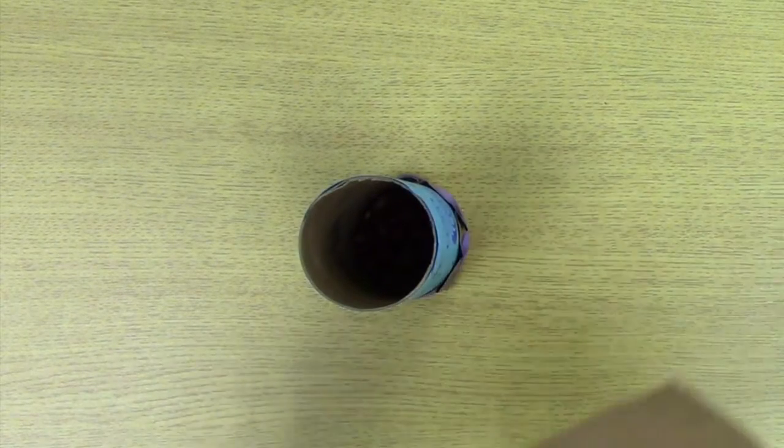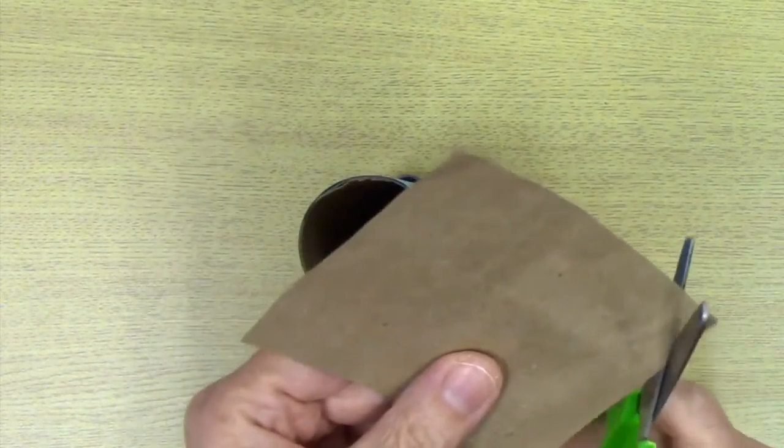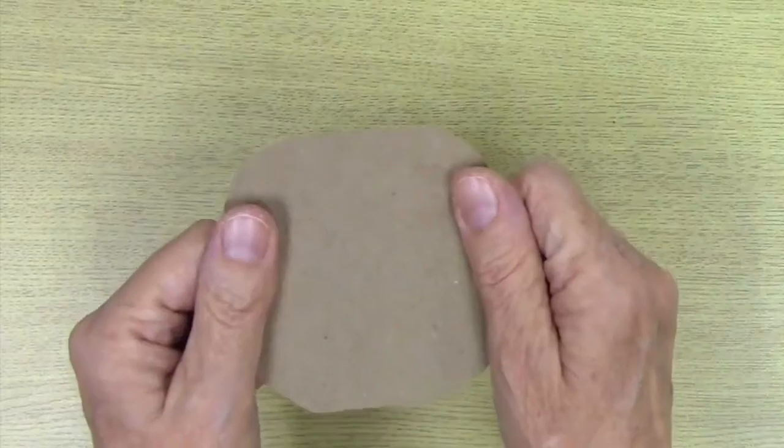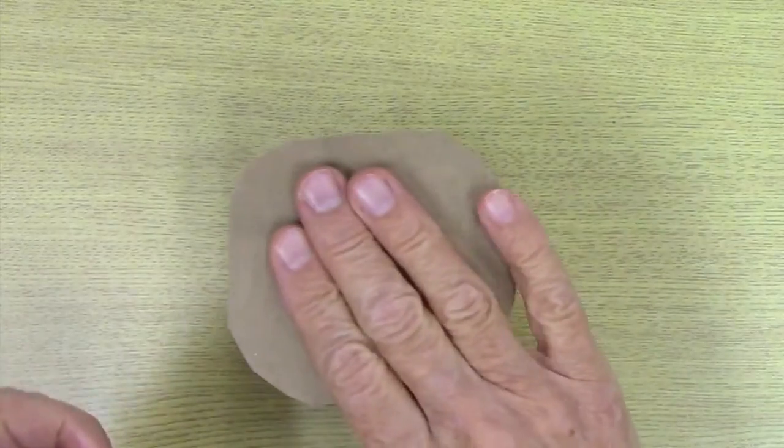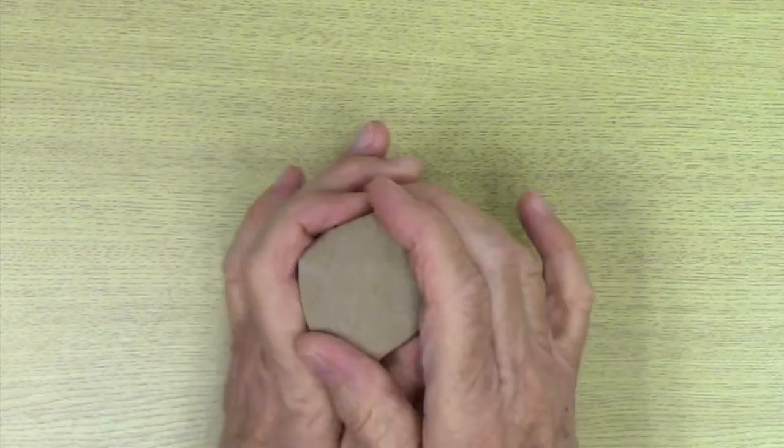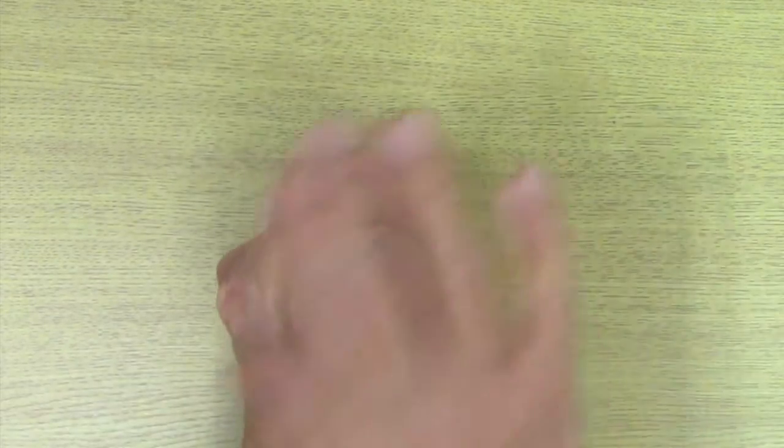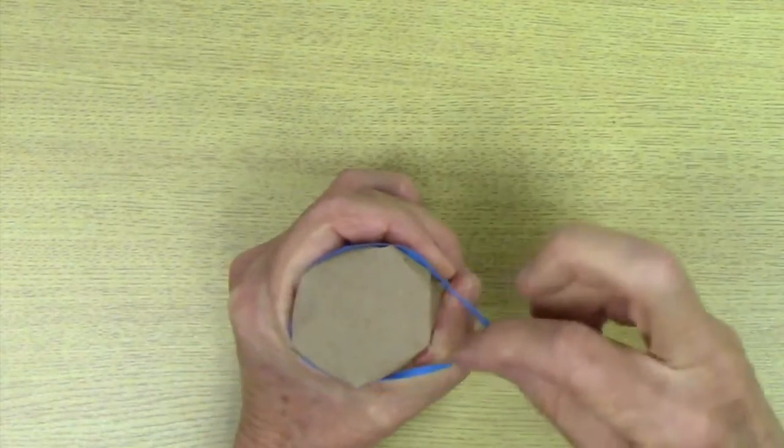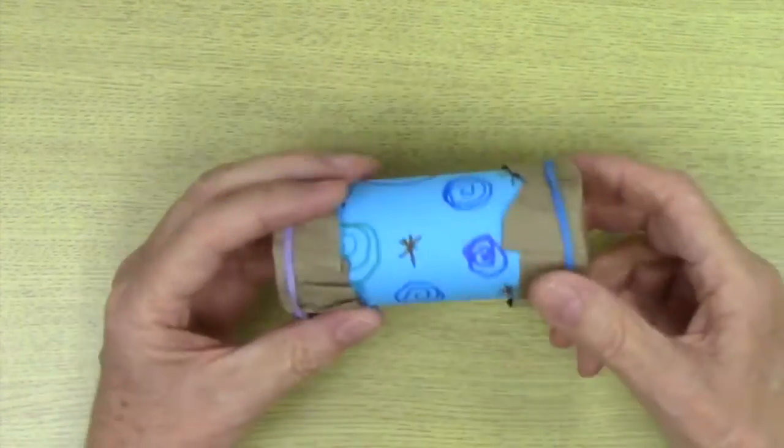Now we're ready to put the top of the shaker on and let's go ahead and cut the corners on this piece too. Just kind of center it over the top of the tube and fold it down and put the rubber band on the end. And there we go. You have a shaker.